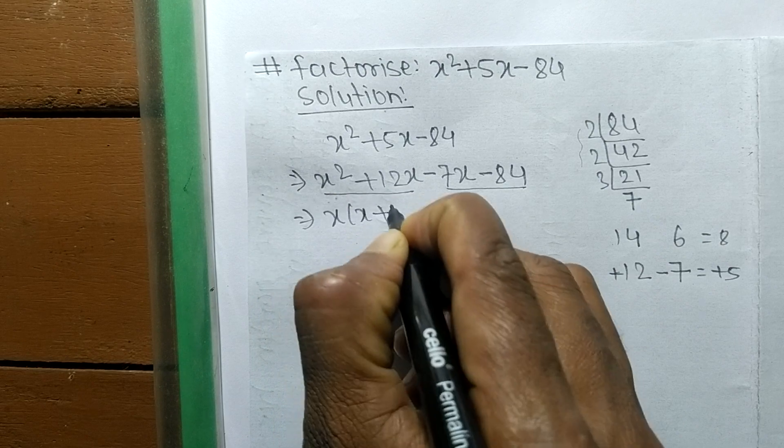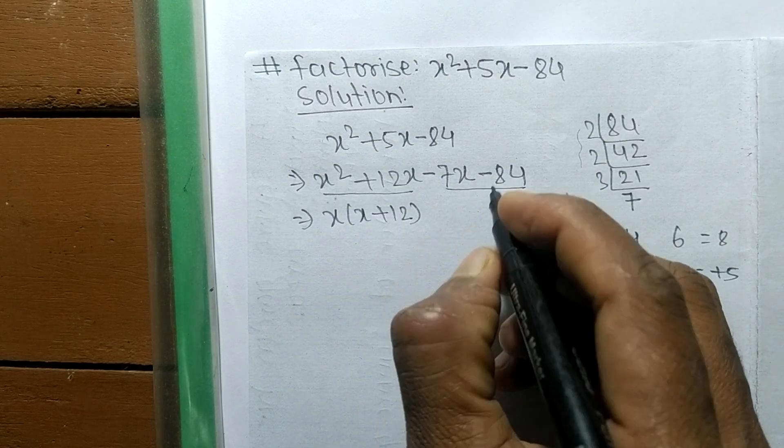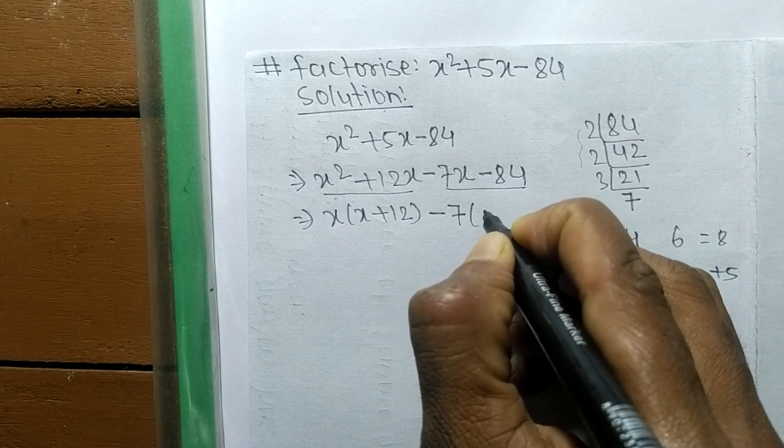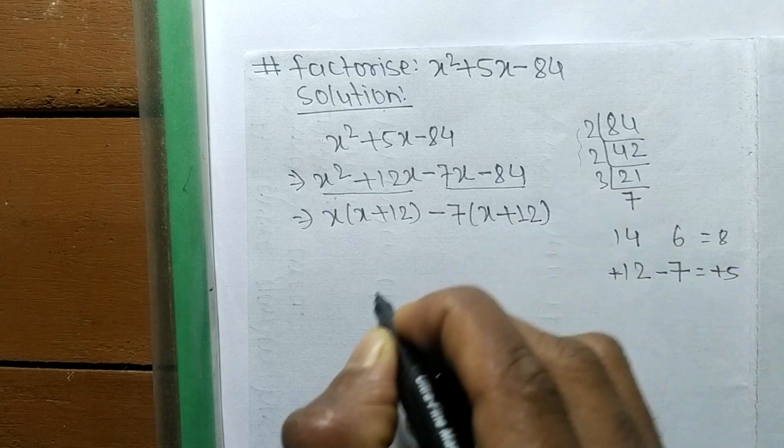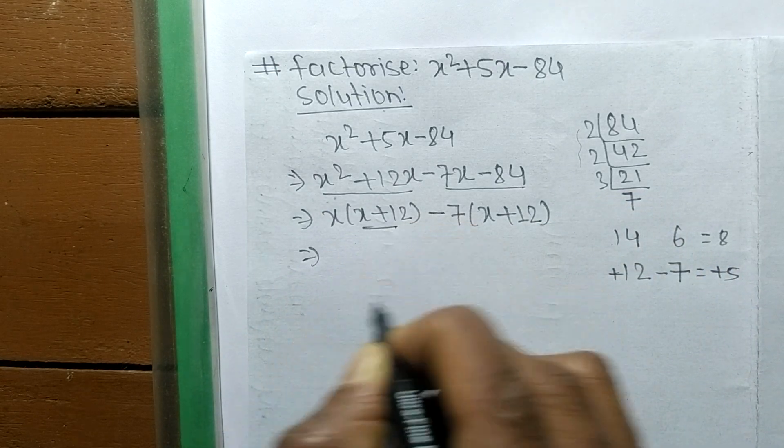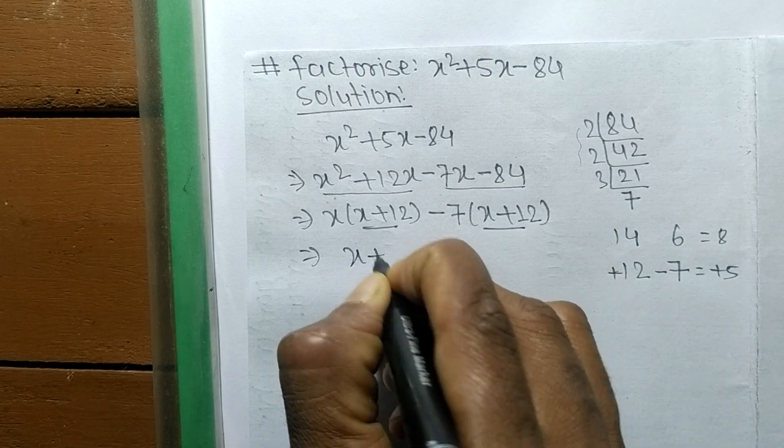In the second pair, the common is -7, and the remaining is (x + 12). So (x + 12) is common in both pairs.